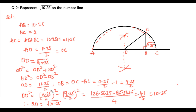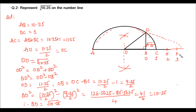Now to represent square root of 10.25 on the number line, we consider B as the center and mark it as O. C is at 1 unit, E represents 2, and extending further F represents 3. With BD as the radius and B as center, we draw an arc that cuts the number line at point P. The distance B to P represents square root of 10.25.